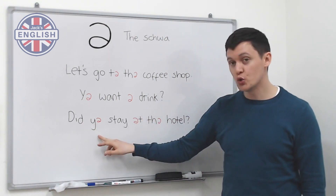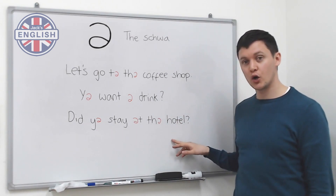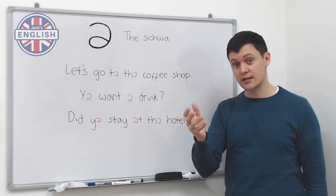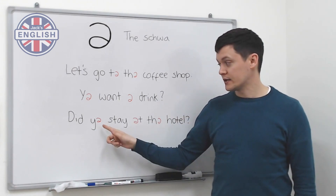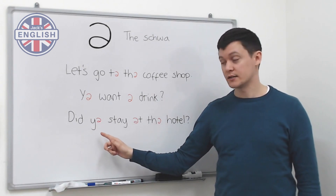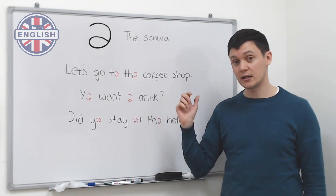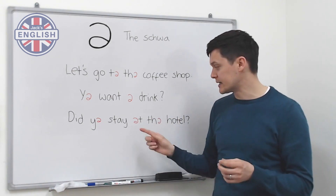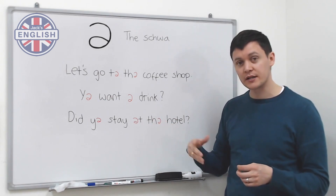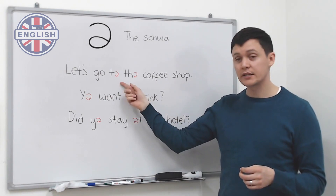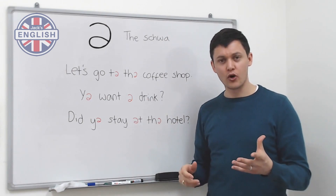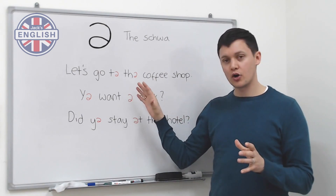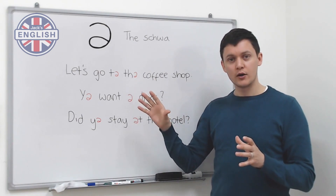Finally: 'Did you stay at the hotel?' Naturally it becomes 'did you stay at the hotel?' Here 'at the' becomes 'at the' with a schwa — just like 'to the.' And as we saw before, 'of' becomes a schwa sound too. These grammar word combinations often become a schwa sound to make it easier to speak.